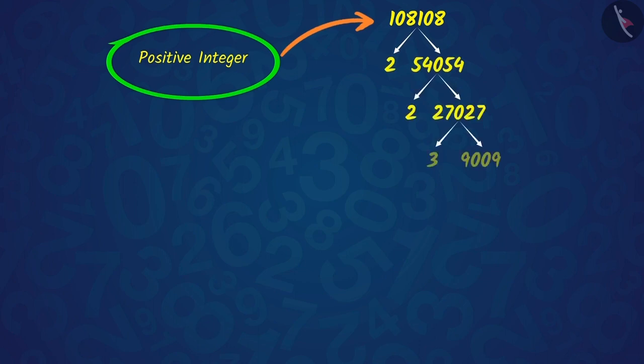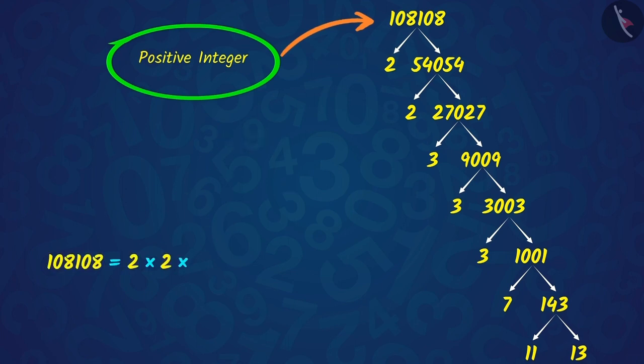Perfect! We can find its factors with the help of a factor tree. In this way, we can factorize 108,108 as a product of prime numbers.